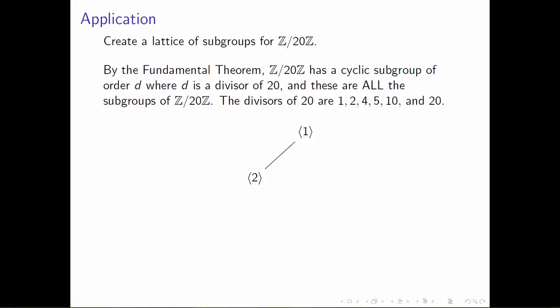Here our group is ℤ mod 20ℤ. Since we just discovered a theorem for writing down all of the subgroups of ℤ mod 20ℤ, we should be able to draw this picture. We want to draw them at certain heights in a meaningful way to indicate any elements that happen to overlap between subgroups. By the fundamental theorem, ℤ mod 20ℤ is a finite cyclic group, and it has a cyclic subgroup of order d, where d is a divisor of 20, and in fact these are all of the subgroups of ℤ mod 20.